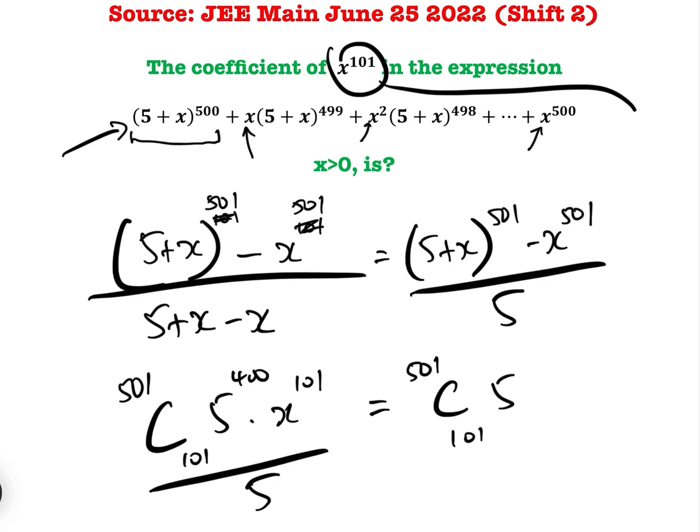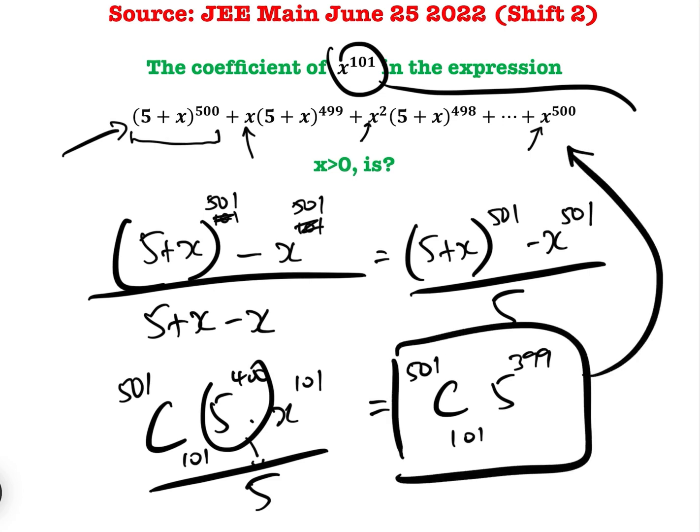And so therefore the coefficient of x to the 101 is 501C101, 5 to the power of 399, because obviously 5 to the 400 divided by 5 is 5 to the 399. And that is the answer to this question.